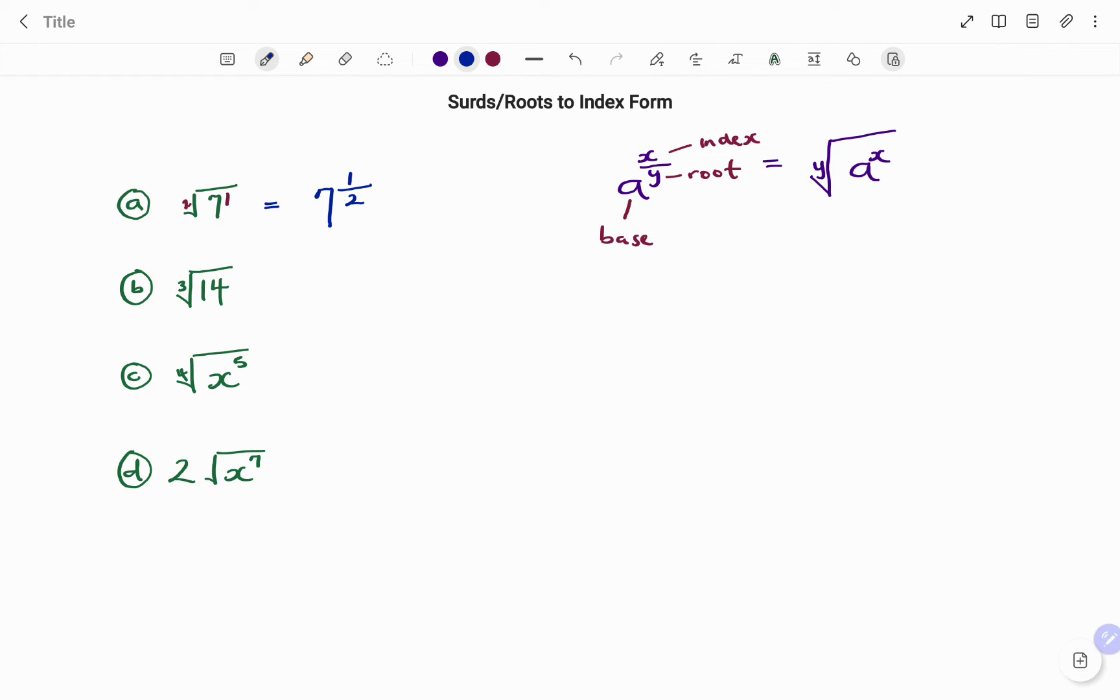In the second example, I have the third root of 14, or the cube root of 14. If I'm writing that as an index form, I start with my base which is 14. Note that there's an invisible power of one here, and then I have that as the power, which is one, over the denominator, which will be the root, which is three in this case.